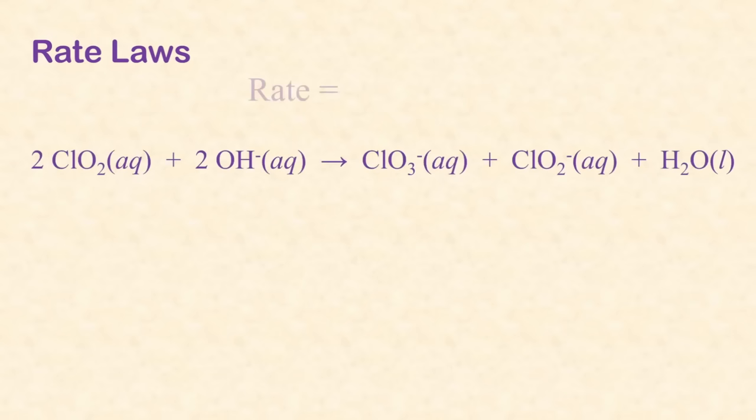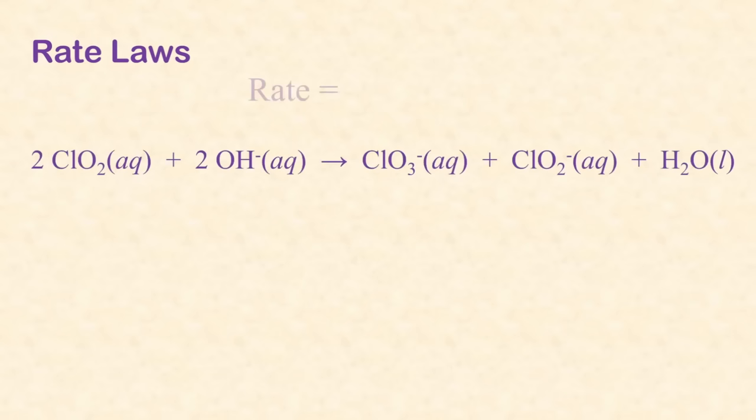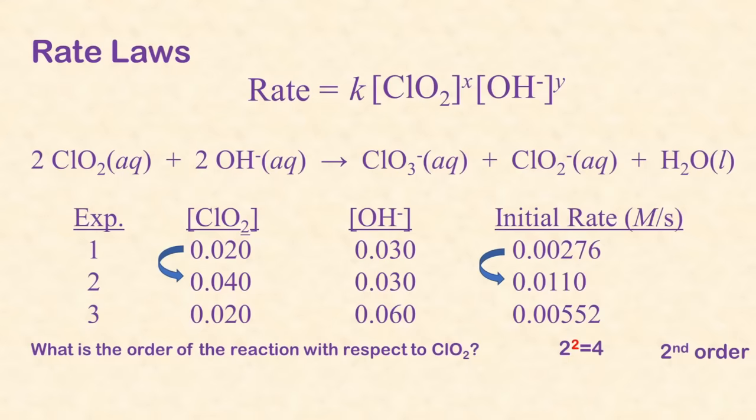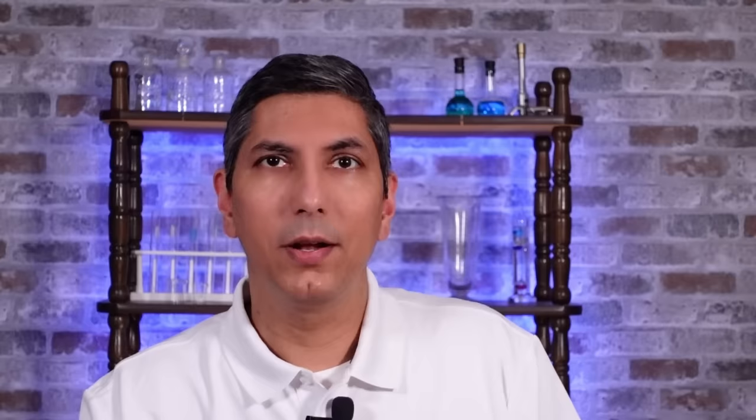Each reaction has its own rate law, and these are determined experimentally. The rate law is always written as rate equals K, which is the rate constant, times the concentration of the first reactant, raised to the power of its order, times the next reactant, raised to its order, and so on. If we double the concentration and the rate quadruples, that's the second order of relationship. On the other hand, if we double a reactant's concentration and the rate doubles, that's the first order of relationship. If we double the concentration and the rate doesn't change at all, that's zero order.